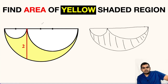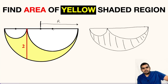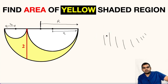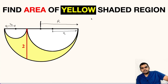First of all, let us assume that the radius of the biggest semicircle is capital R, let this be small r1, and this be small r2. The area of the yellow shaded region can be written as the area of the big semicircle with radius capital R, which will be π times R squared divided by 2, since it is a semicircle.